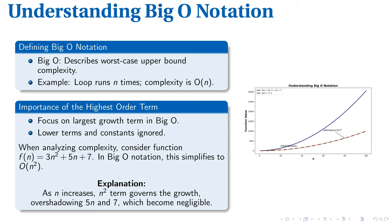Diving into Big O Notation, consider it as an indicator of the worst-case upper limit of complexity. For example, if a loop runs N times, the complexity is succinctly expressed as O(N). This gets interesting when we discern the importance of focusing on the highest-order term.